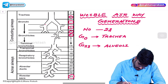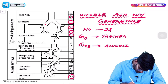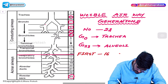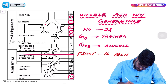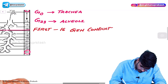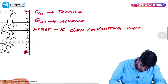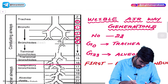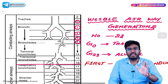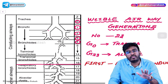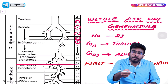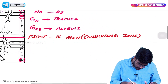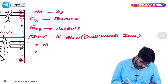The first 16 generations are called the conducting zone. Why are the first 16 generations called the conducting zone? Because in this area, they are only involved in the transfer of air — there is no exchange of gases happening. In the first 16 zones, air is simply passing down to the alveolus, but there is no exchange of gases. So the key point is: in the conducting zone, there is no gaseous exchange.